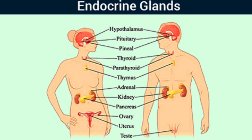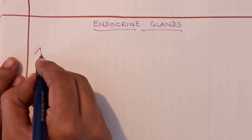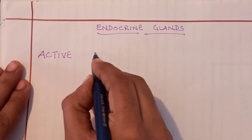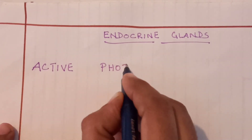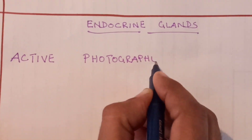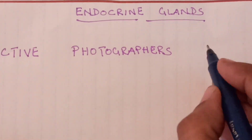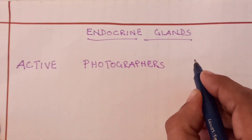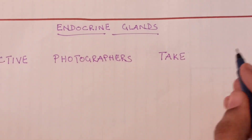Hi, today I'm here with an interesting mnemonic which will help you to memorize the important endocrine glands. In this picture you can see the important endocrine glands present in the human body. With a simple sentence you can easily recollect all the important endocrine glands present in the human body.